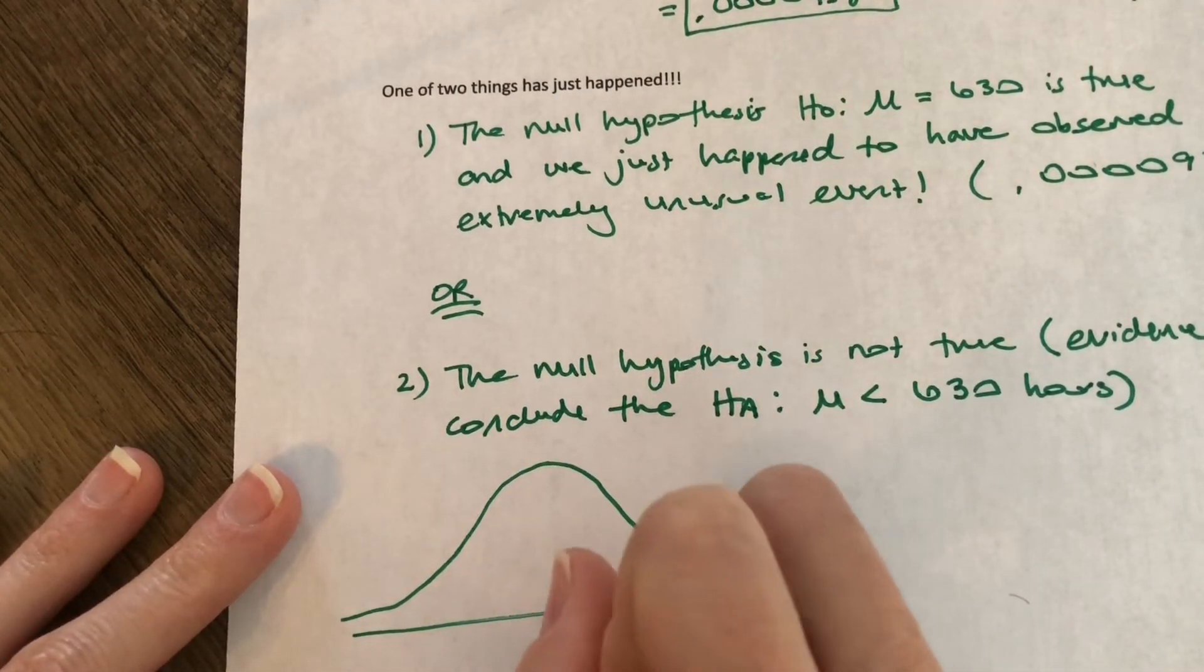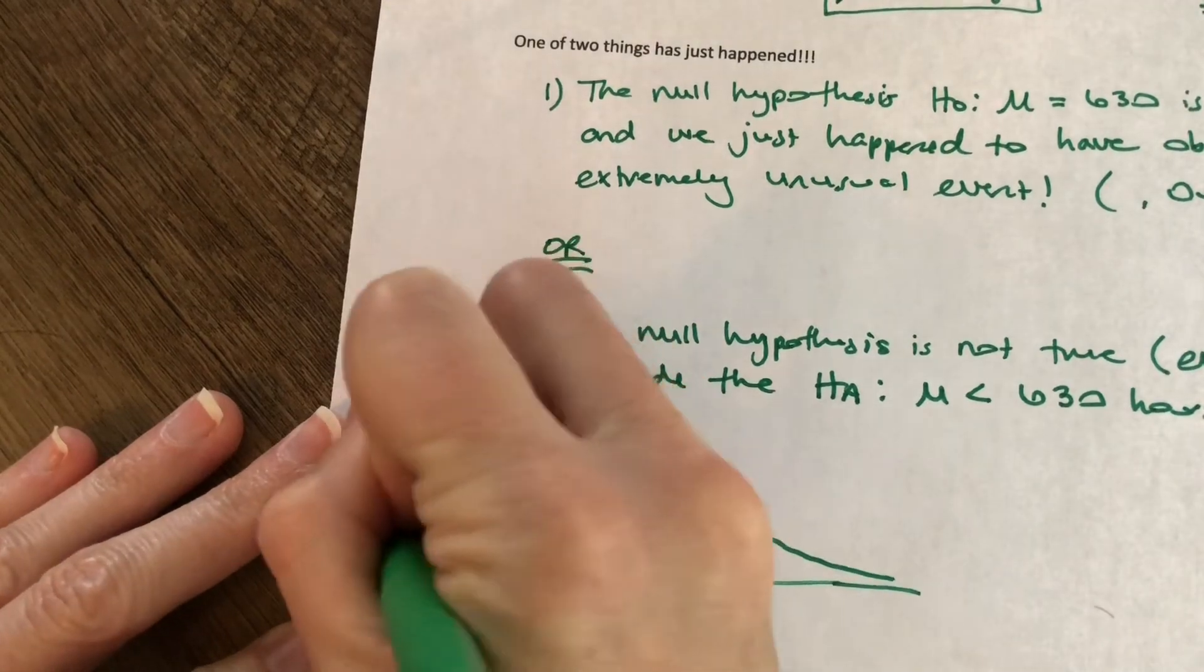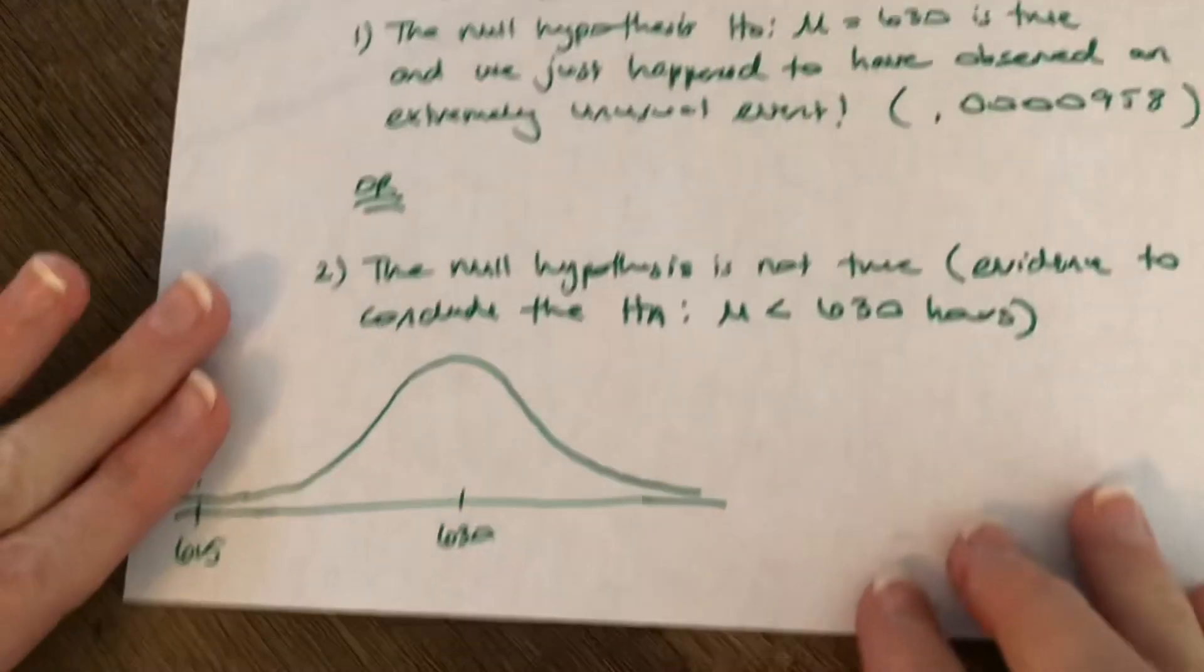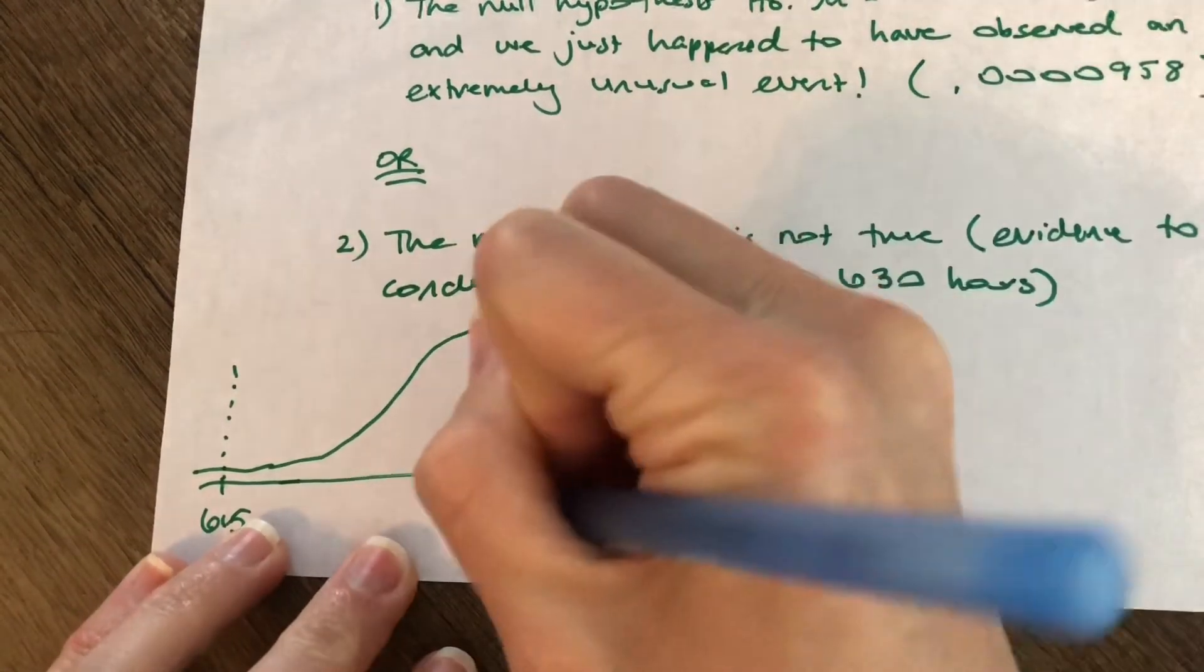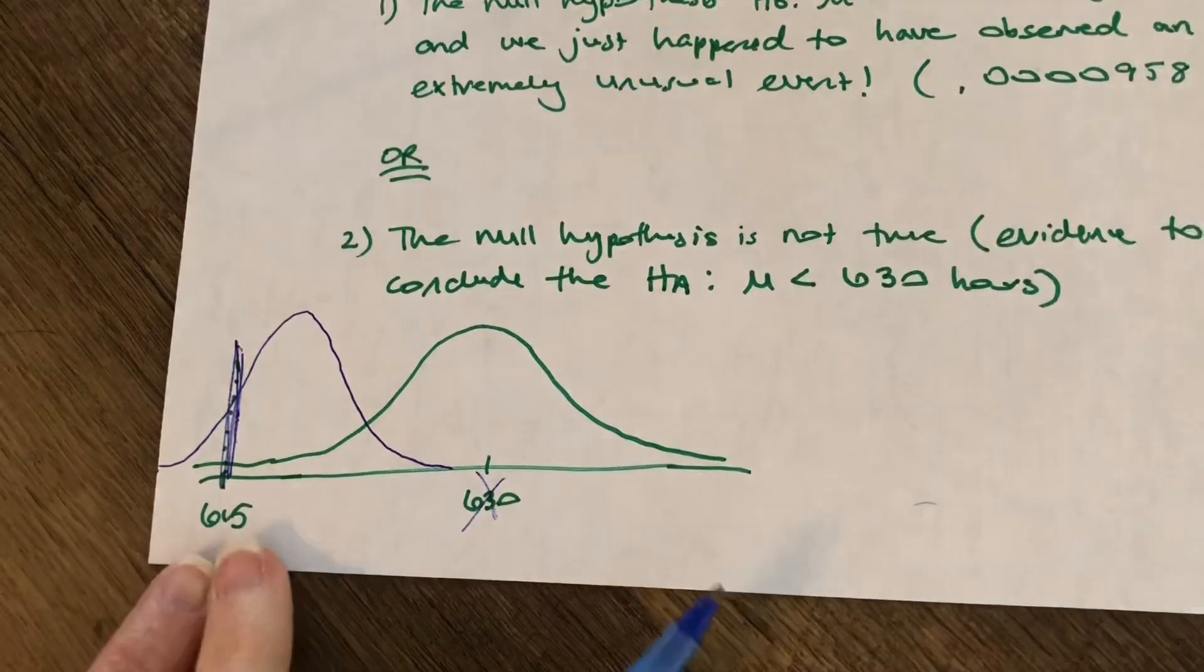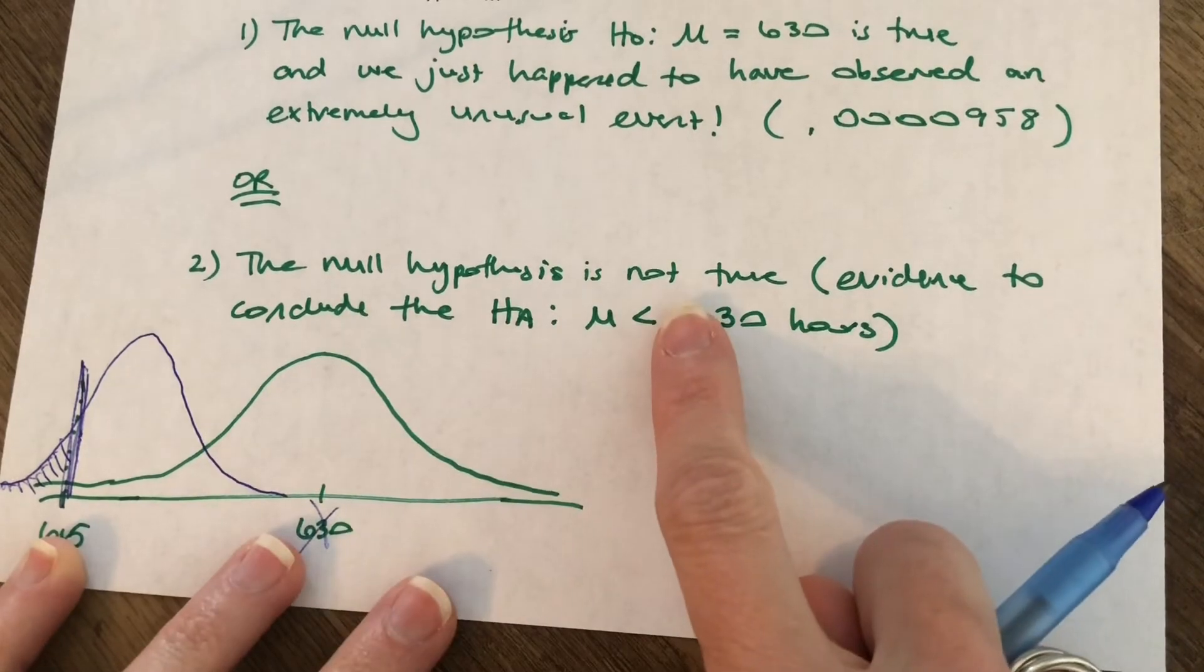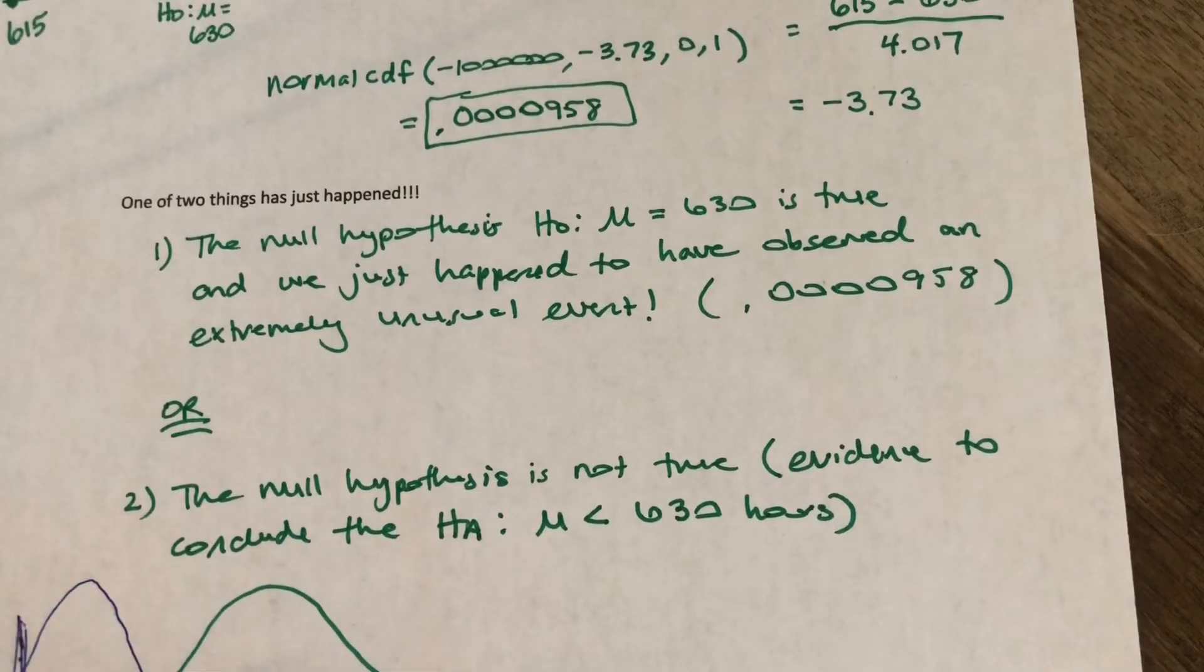In other words, what we just found is that if the mean is really 630 and we observe 615 right down here, what we just found is that is extremely unusual. It only happens 0.00958 percent of the time. What we're saying here, and I think you can see it if I just draw another curve, is well, if the mean is not really 630 and it's really somewhere less than 630, now observing that 615 seems much more likely. There's a much bigger area here than this tiny little tail area up here. So the other option is that that null hypothesis is not true, and we have evidence to conclude the alternative hypothesis.